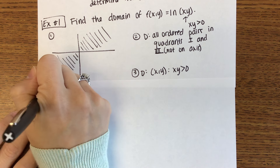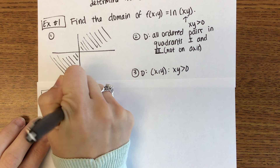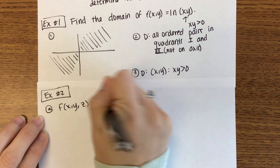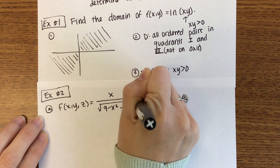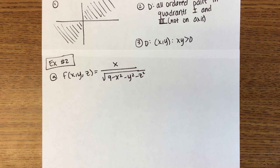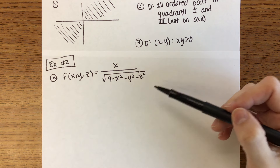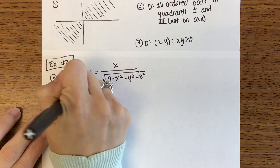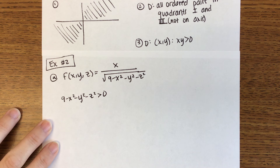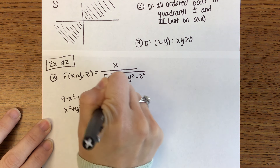We're going to do another example, then move on to graphing. This second example: f of x, y, z equals x divided by the square root of 9 minus x squared minus y squared minus z squared. The numerator we don't need to worry about. The denominator cannot be zero, and everything underneath the square root has to be positive. So 9 minus x squared minus y squared minus z squared has to be greater than zero.